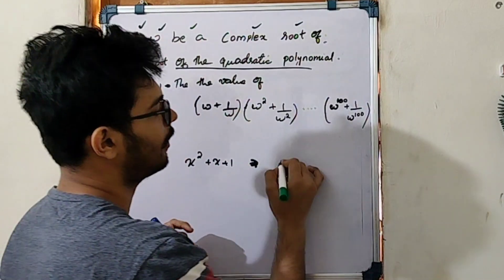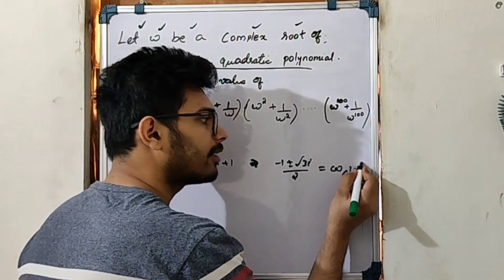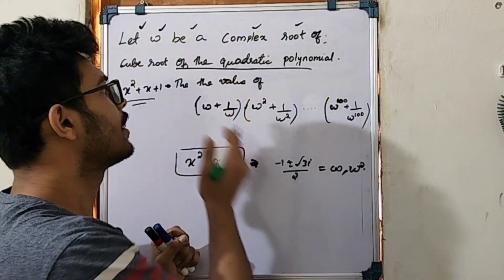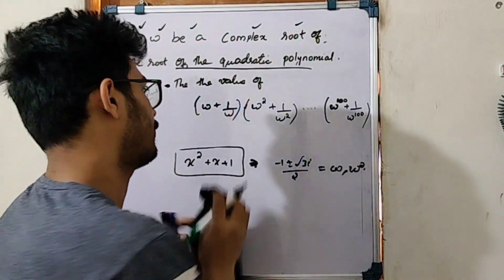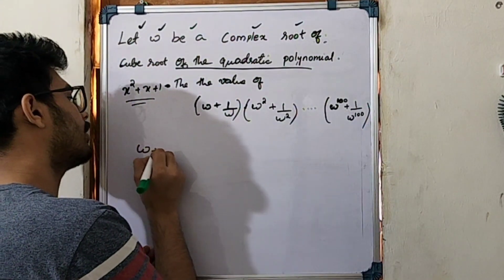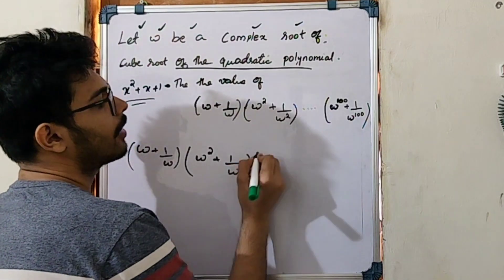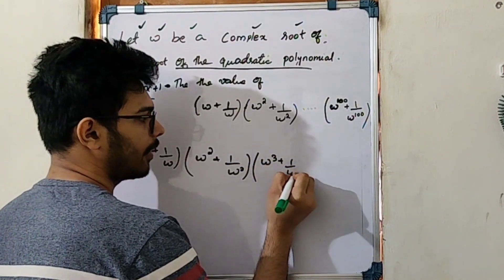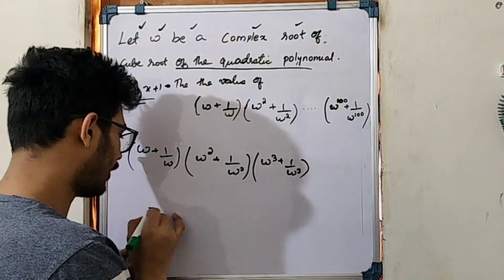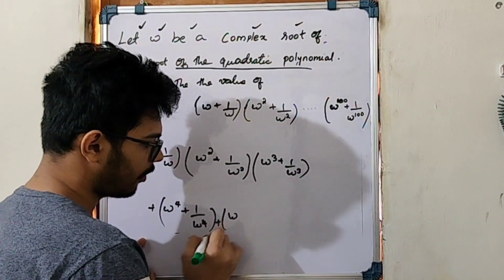I will show you how to solve the value of this series. We write omega plus 1 by omega, then omega squared plus 1 by omega squared. Next, omega cubed plus 1 by omega cubed. Then omega to the 4th plus 1 by omega to the 4th, and omega to the 5th plus 1 by omega to the 5th.